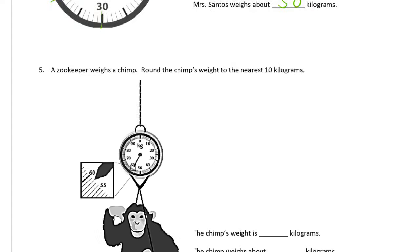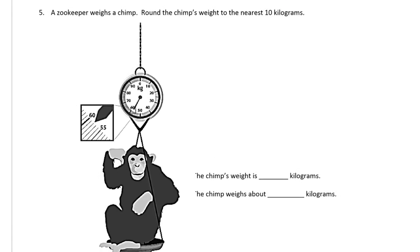And then we have a zookeeper weighs a chimp. Round the chimp's weight to the nearest 10 kilograms. So the scale is really kind of small here, so to help you read it they've zoomed in on this little square right here, and here's the picture of what it looks like when you zoom into that little square—it tells you exactly where it's pointing.